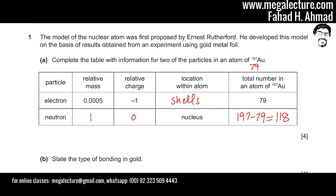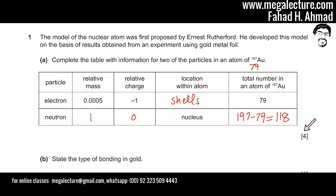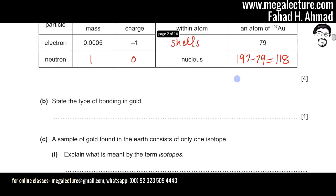We also need to figure out the number of neutrons in an atom of gold. Neutrons are found by subtracting the proton number from the atomic mass: 197 minus 79 gives 118 neutrons. This was a straightforward part worth four easy marks.